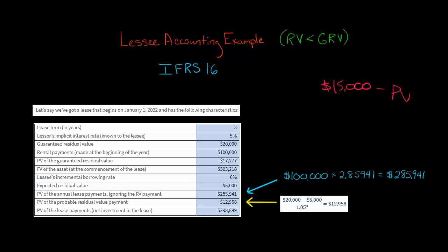Basic facts of the lease: January 1, 2022 is the first day of the lease term and also the first day a payment is made. Payments are $100,000 a year for three years. The lessee happens to know the lessor's implicit interest rate, which is 5%, and that is the discount rate we'll use when calculating present values. The lessee's incremental borrowing rate is not relevant here — that would only be used if the lessee did not know the lessor's implicit interest rate.